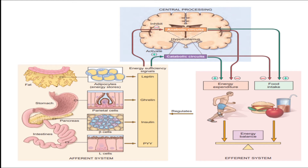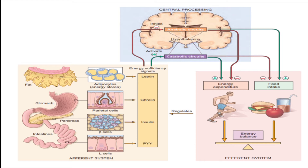Conversely, when body energy stores are low or the body is in a fasting state, ghrelin sends a signal to the hypothalamus to activate the anabolic circuit, resulting in more food intake and less energy expenditure. By regulating the catabolic and anabolic circuits, energy balance and body weight are maintained. When this balance is disrupted, obesity can occur.